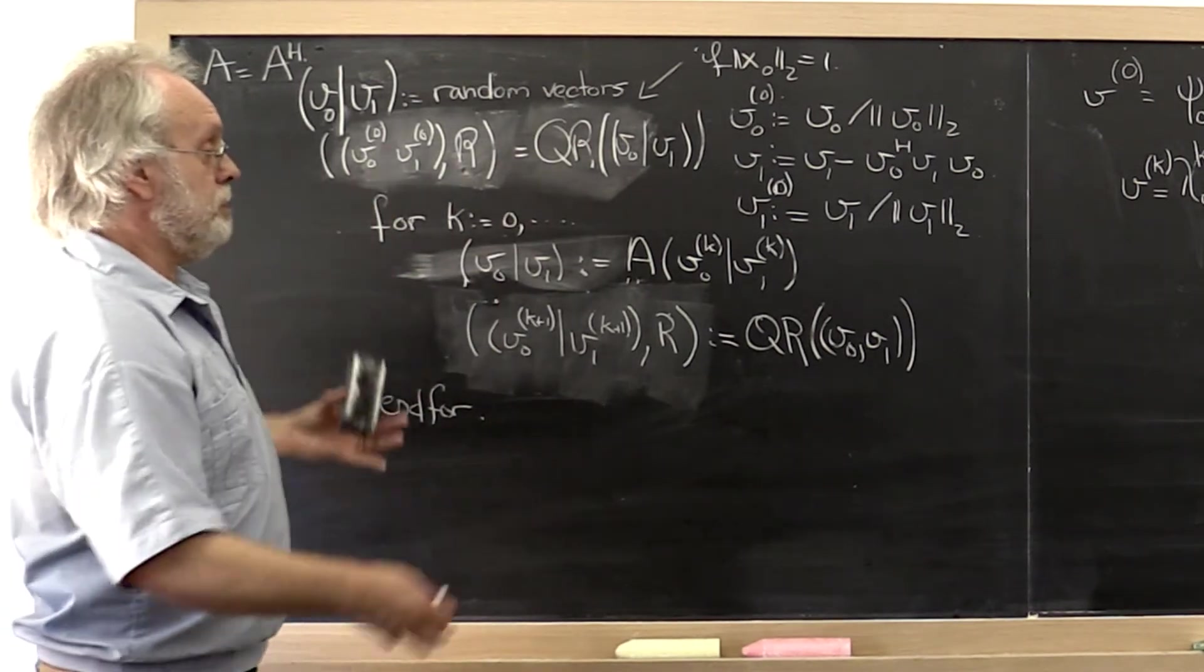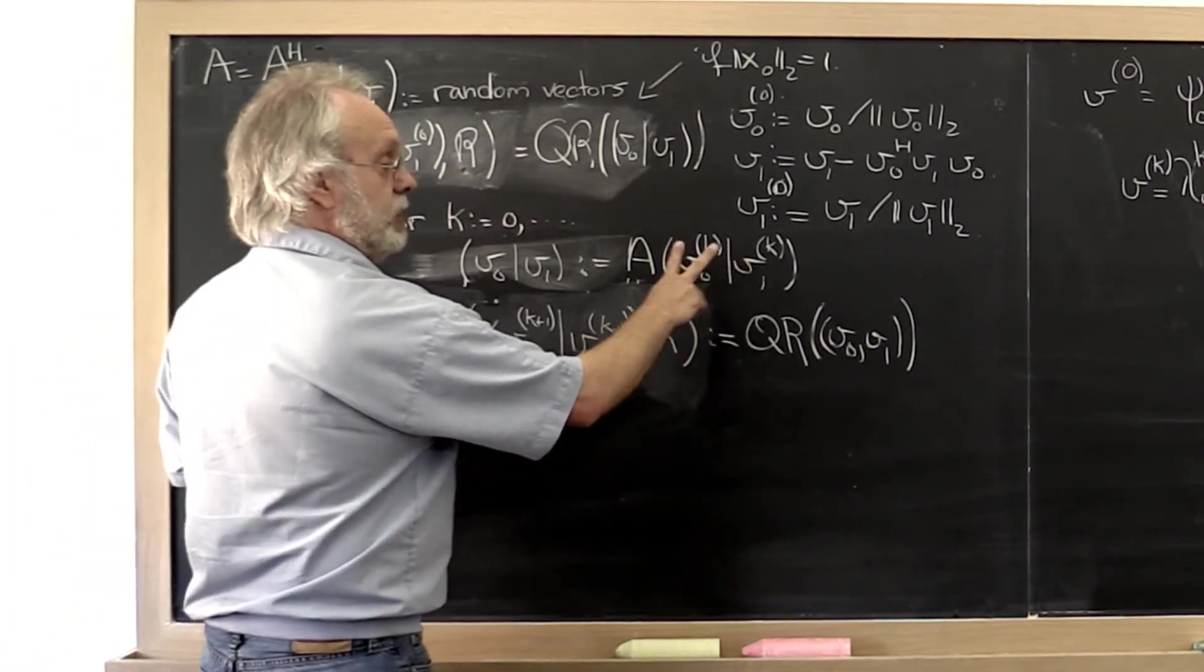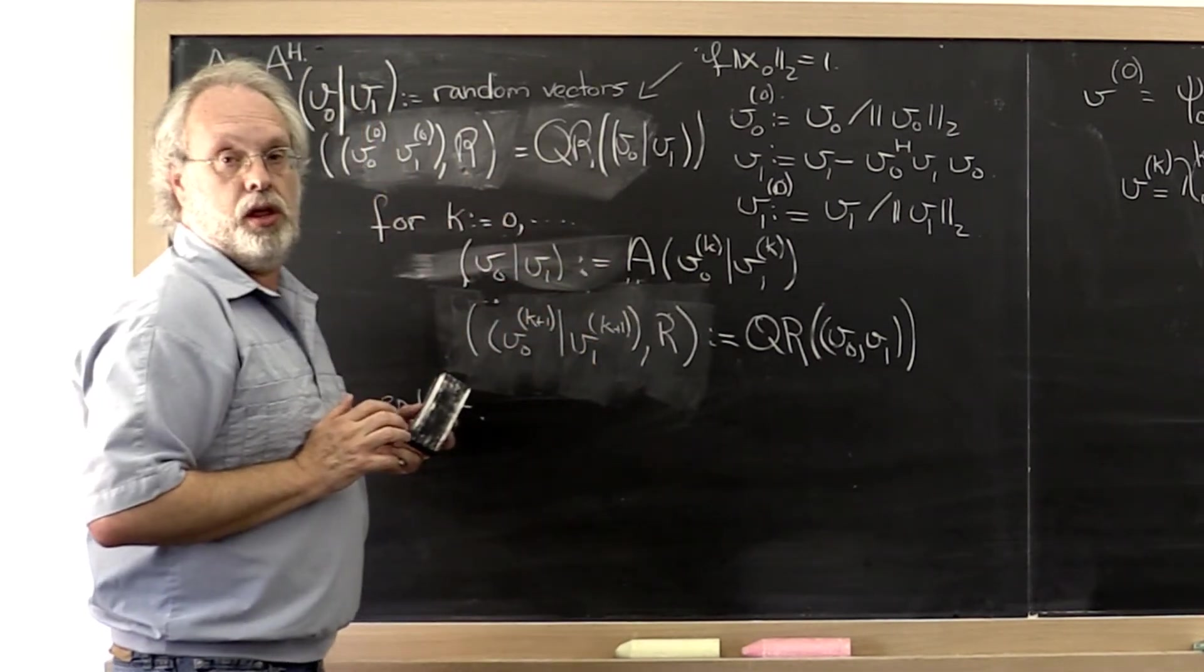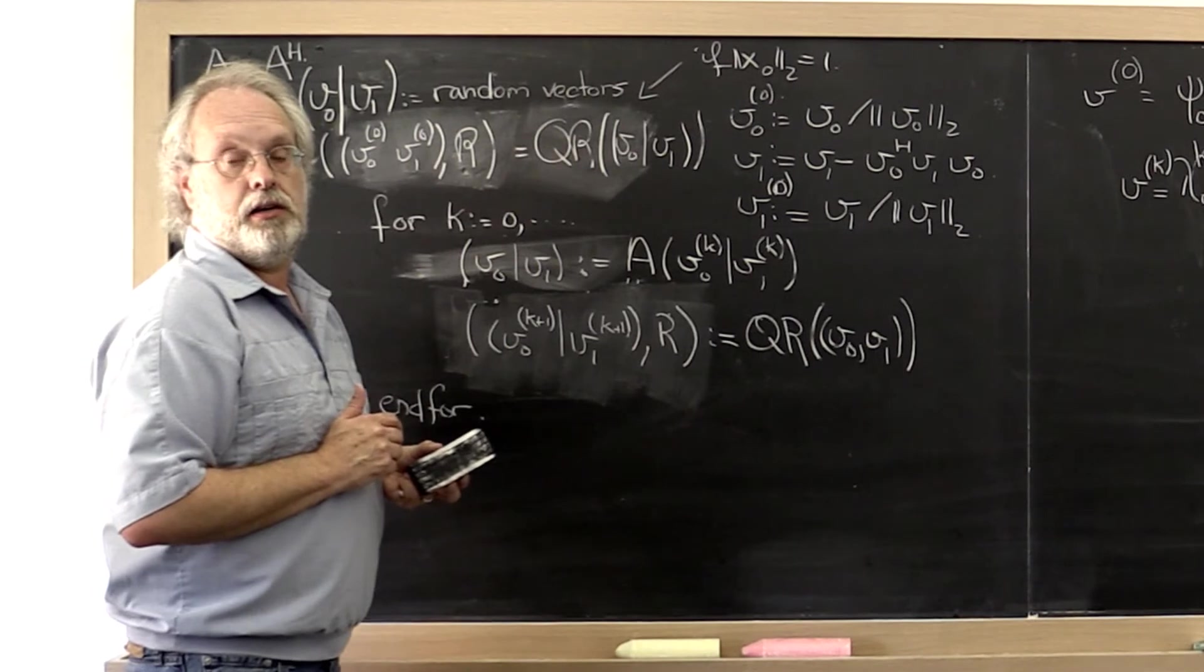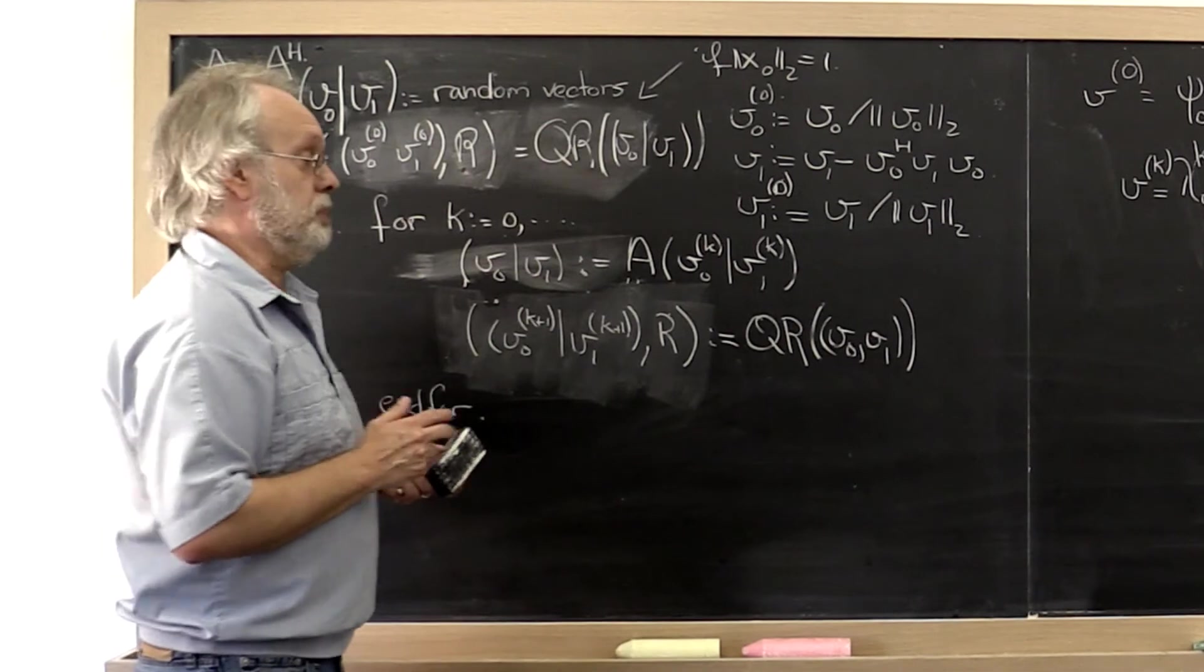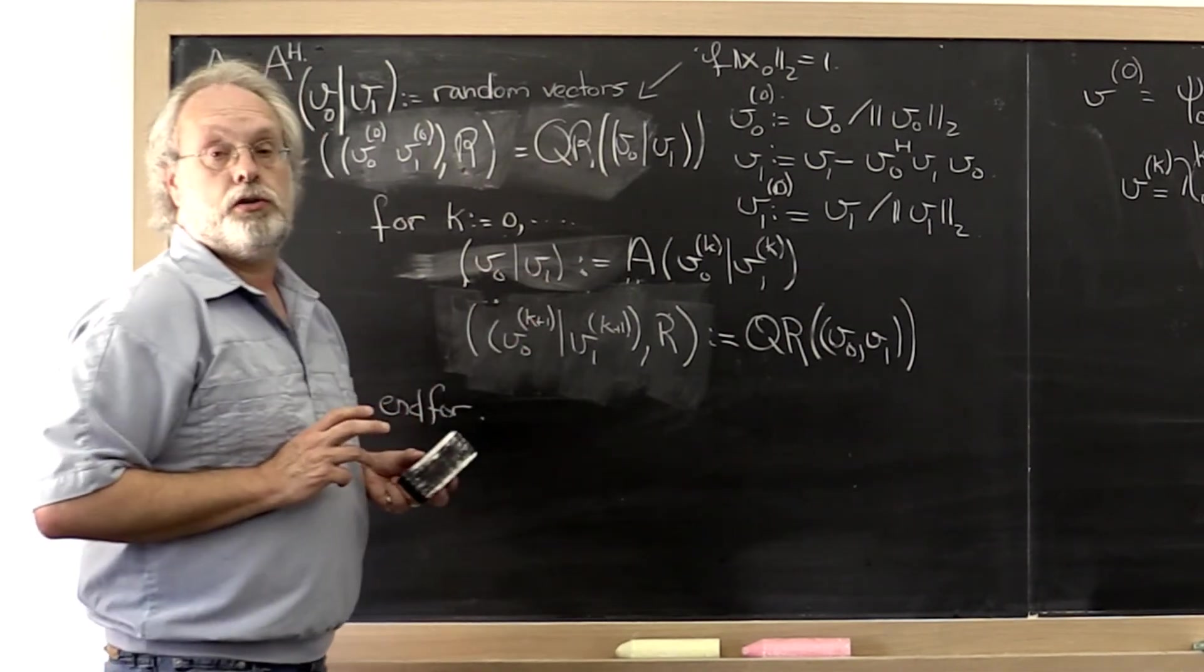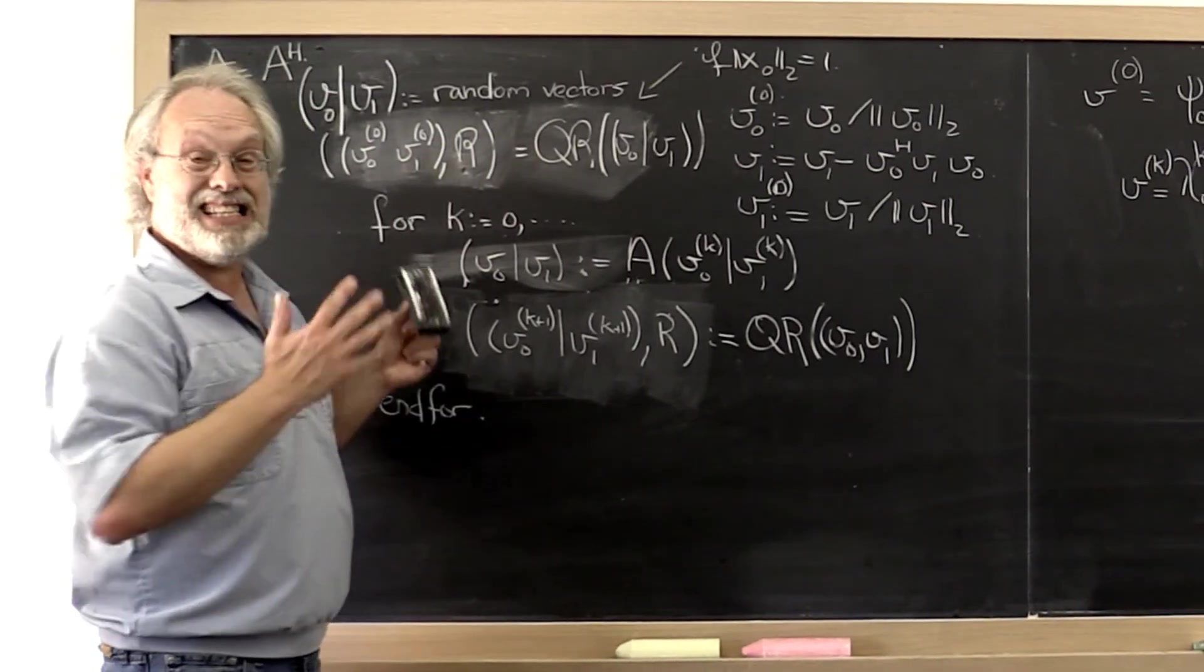And this is known as a subspace iteration because these two vectors that we're now playing with span a subspace of rm if a is m by m. Happens to be that we're just working with two vectors now. It's that simple.